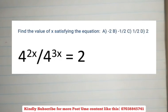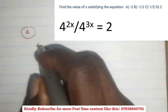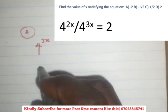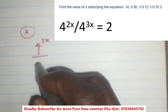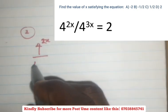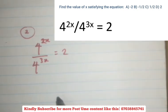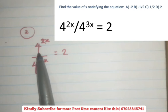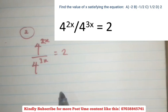For the second question, you have to find the value of x satisfying the equation 4 to the power 2x divided by 4 to the power 3x is equal to 2. From the law of indices, you can see that on the left hand side, you have the same base, which is 4. And in indices, your division stands for subtraction or minus.